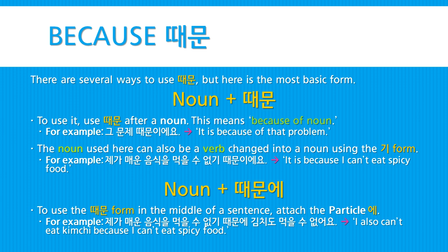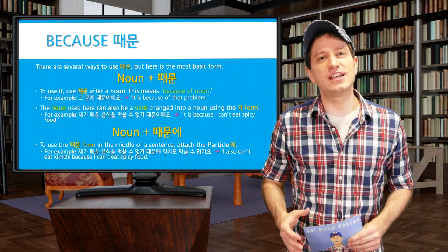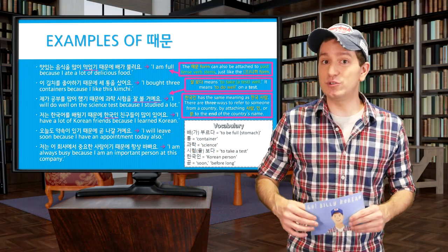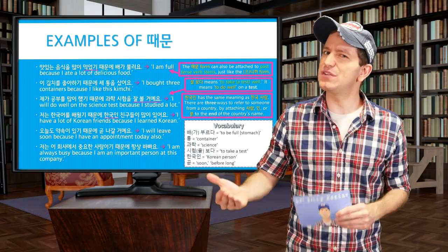You can also use this form in the middle of a sentence just by attaching the particle 에 after 때문. For example, 제가 매운 음식을 먹을 수 없기 때문에 김치도 먹을 수 없어요 — 'I also can't eat 김치 because I can't eat spicy food.' And that's what I want to focus mostly on in this lesson — using 때문에 in the middle of a sentence.